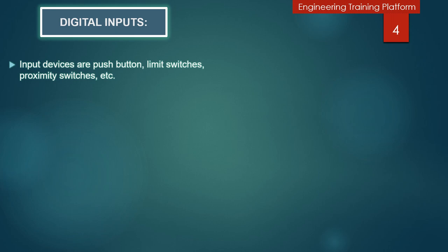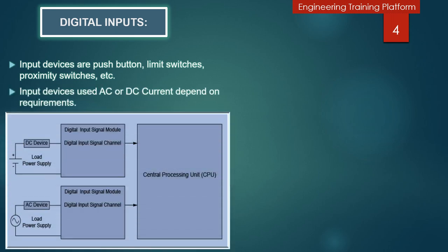Now we will discuss about digital inputs. Input devices include push buttons, limit switches, pressure switches, temperature switches, flow switches, level switches, proximity switches, electrical switches, and so on. Some input devices use AC current and some use DC current. The specification of each device identifies the voltage and current required. You can see in the picture the DC supply source and the AC supply source.